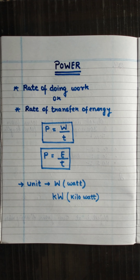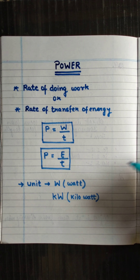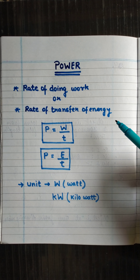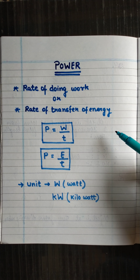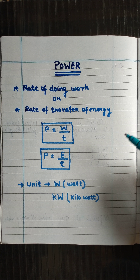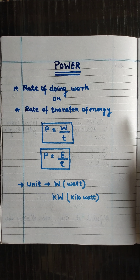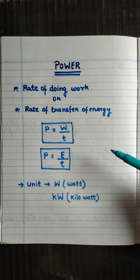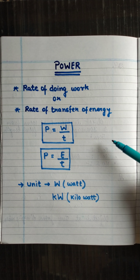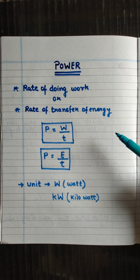The next topic is power. All living organisms are not able to do work with the same rate or speed. Human beings are able to do work at a slower rate, while machines do it at a faster rate. A stronger person is able to do work in lesser time whereas a weaker person takes more time. A more powerful vehicle completes the whole journey in shorter time than a less powerful one.